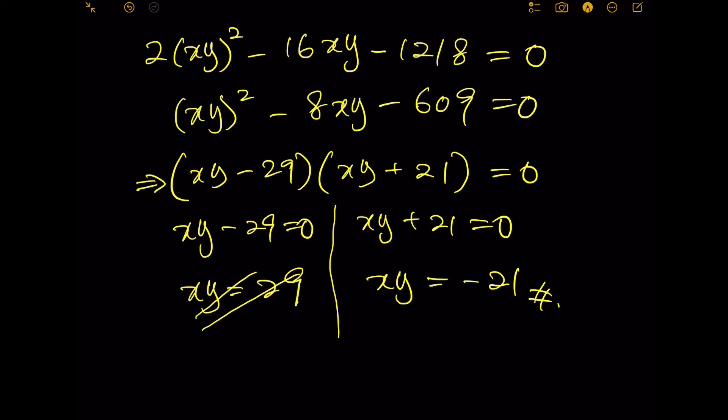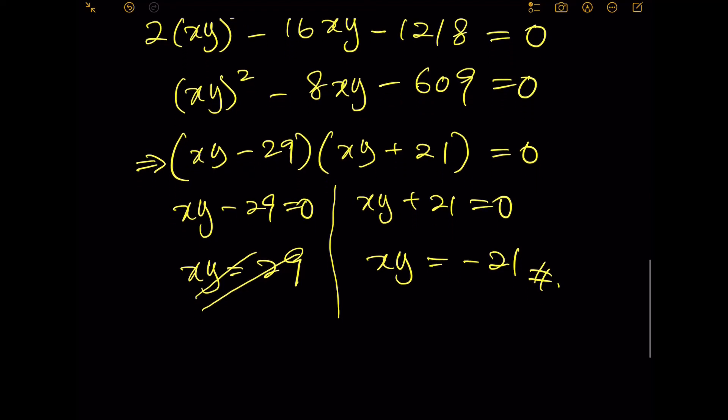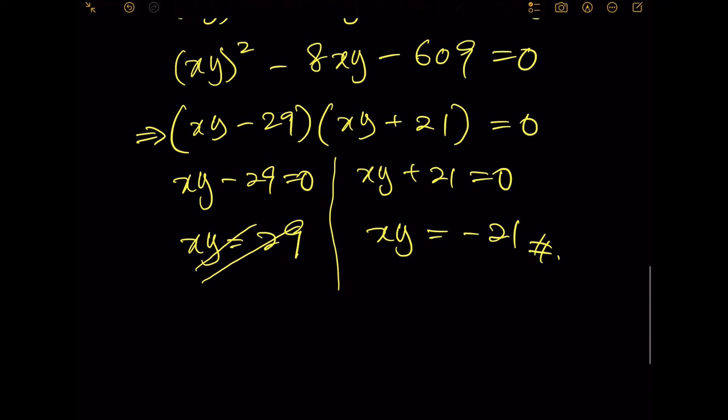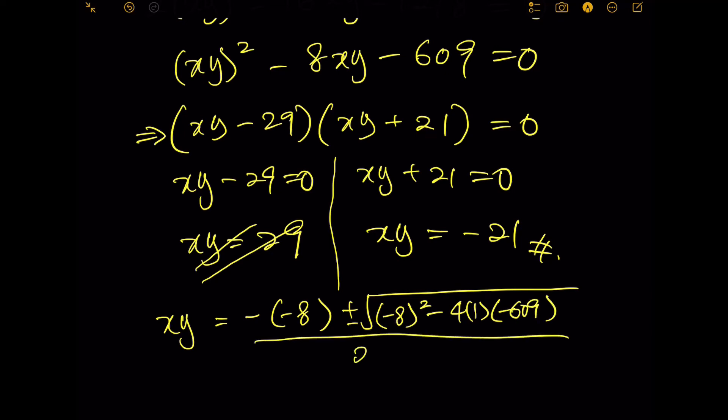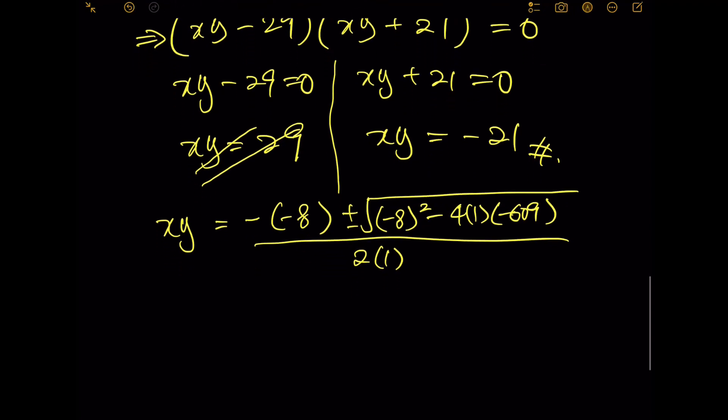In the case that you are not able to get this answer by factoring, you can use the standard solution for a quadratic equation, which is xy equals negative b plus or minus the square root of b^2 minus 4ac, divided by 2a. If you solve this equation you will get 29 and negative 21 respectively.